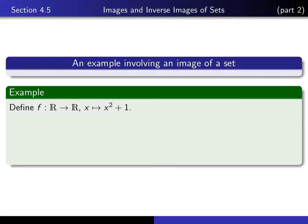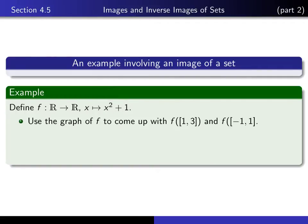Let's consider the following function. It's the function from the reals to the reals, given by f of x is equal to x squared plus 1. It's pretty easy to calculate the image of various subsets of the reals, because we can draw a picture of what the function looks like. So let's use the graph of f to find the image of the closed interval from 1 to 3, and the image of the closed interval from minus 1 to 1.